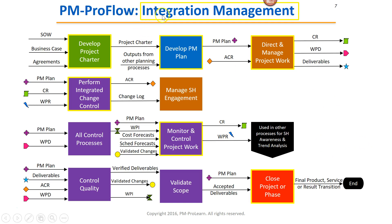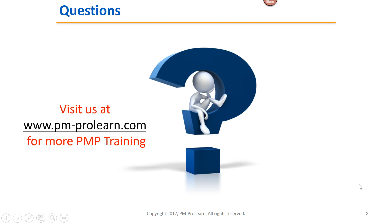This flow chart shows you the entire integration management knowledge area — all the processes, all the inputs and outputs, and the flow between integration processes and non-integration processes. Really, this whole chart shows you project management 101 from start — Develop Project Charter — to the end of the project. We've got 10 of those, one for each knowledge area, and we teach them in much more depth during our PMP boot camp training and self-paced courses. Visit us at pmprolearn.com for more PMP training and to access those knowledge area charts. Thanks — we'll see you on the next PMP hack video.